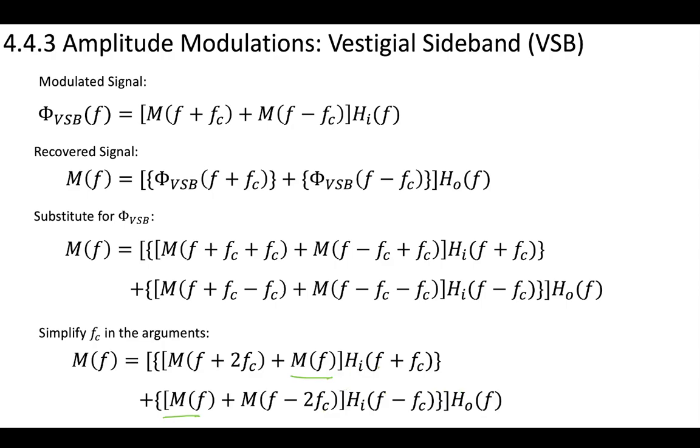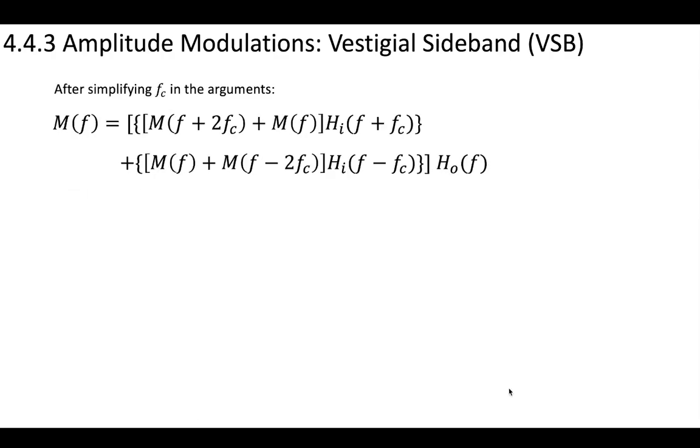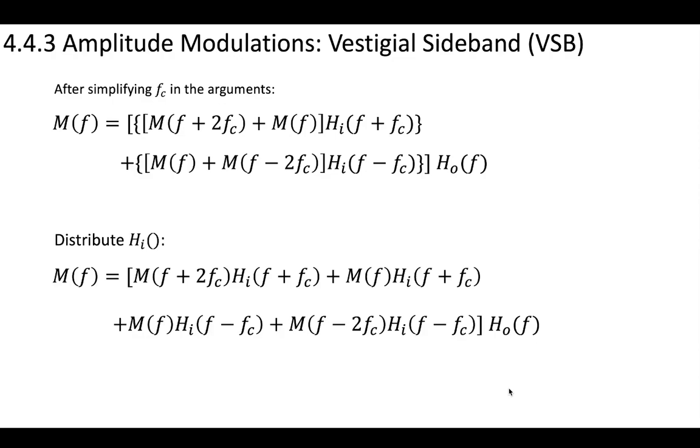And we're already seeing that we have this hi filter and our complement hout filter. So after simplifying these, it looks like this, and we can now distribute our input filter terms. So we'll multiply this here and here, and this here and here. Outside of all of this is still our output filter.